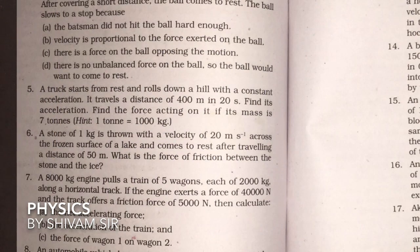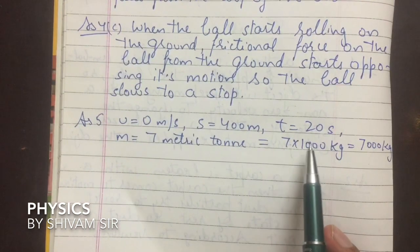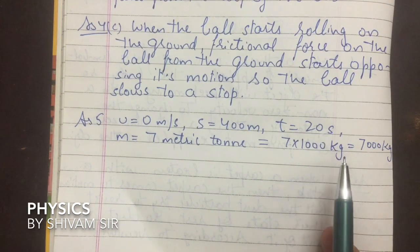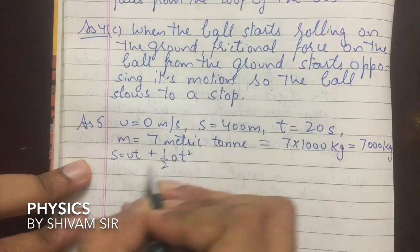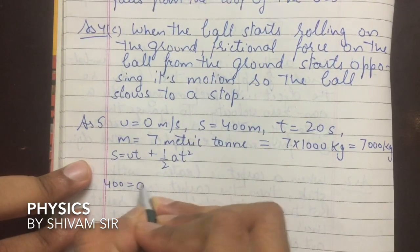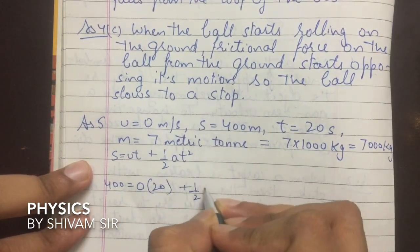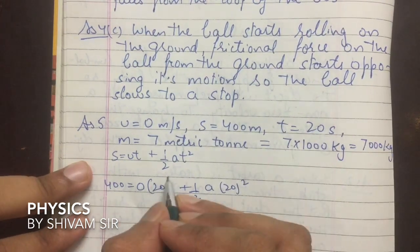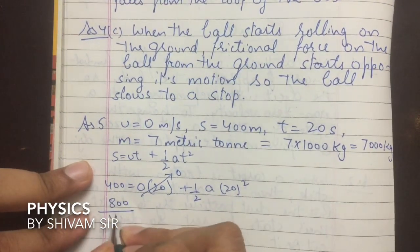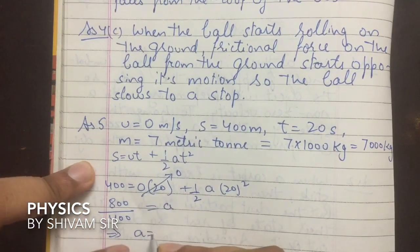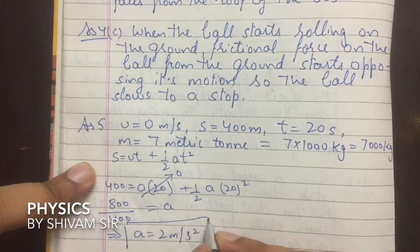Next question is a numerical. A truck starts from rest and rolls down a hill with constant acceleration. Initial velocity u = 0, distance s = 400 m, time t = 20 seconds. Find acceleration. Using s = ut + ½at²: 400 = 0 + ½ × a × 400, so a = 800/400 = 2 m/s².